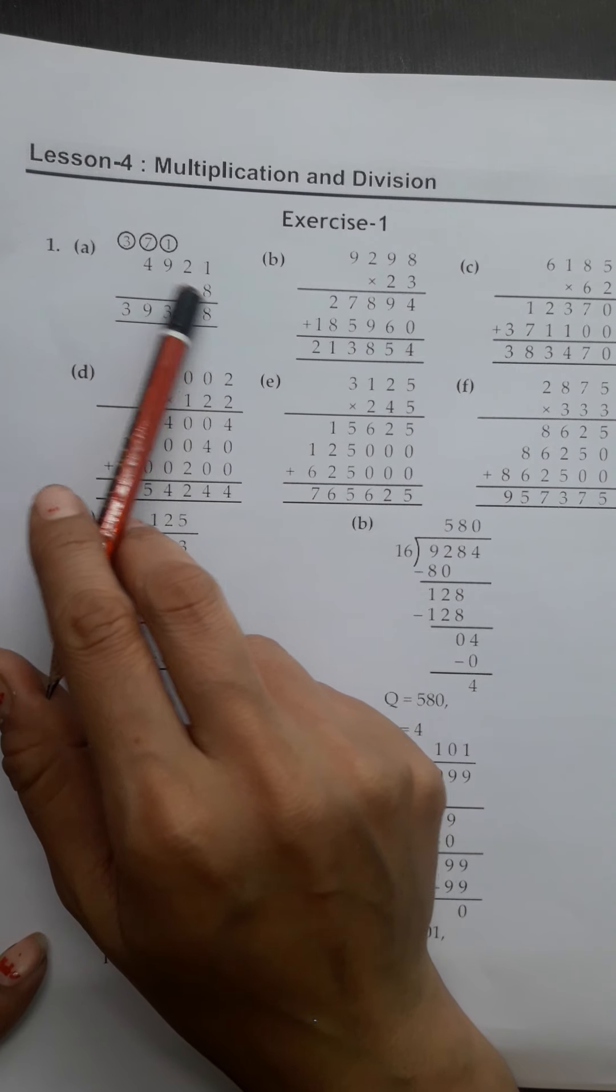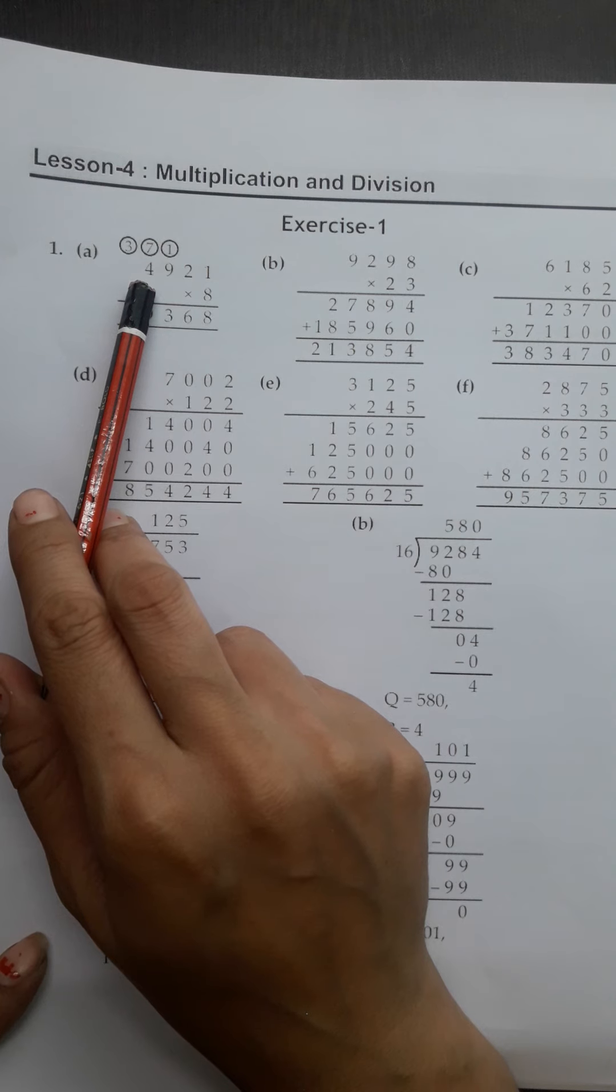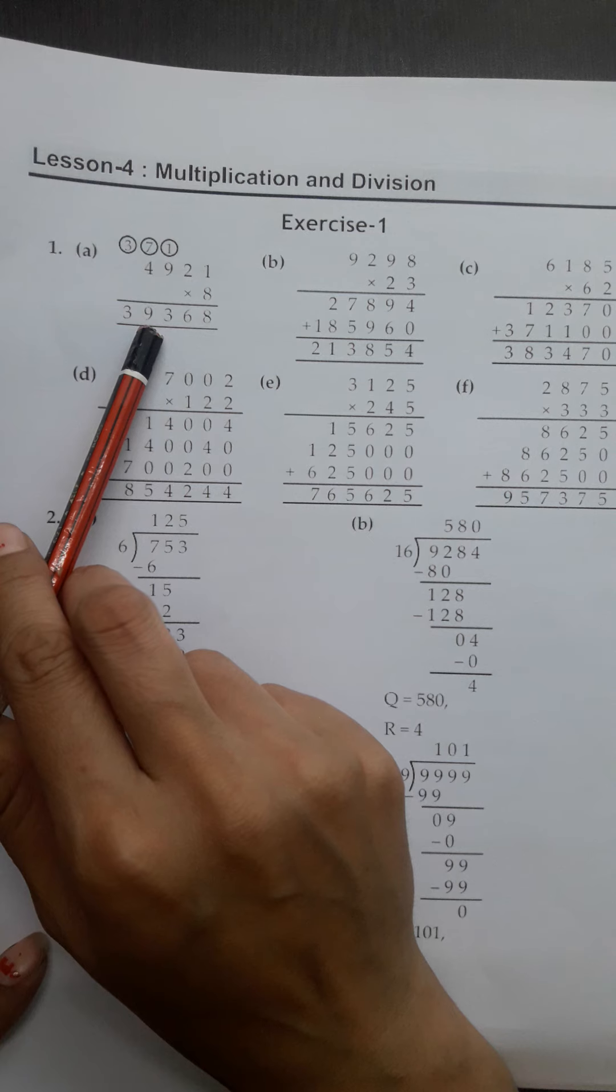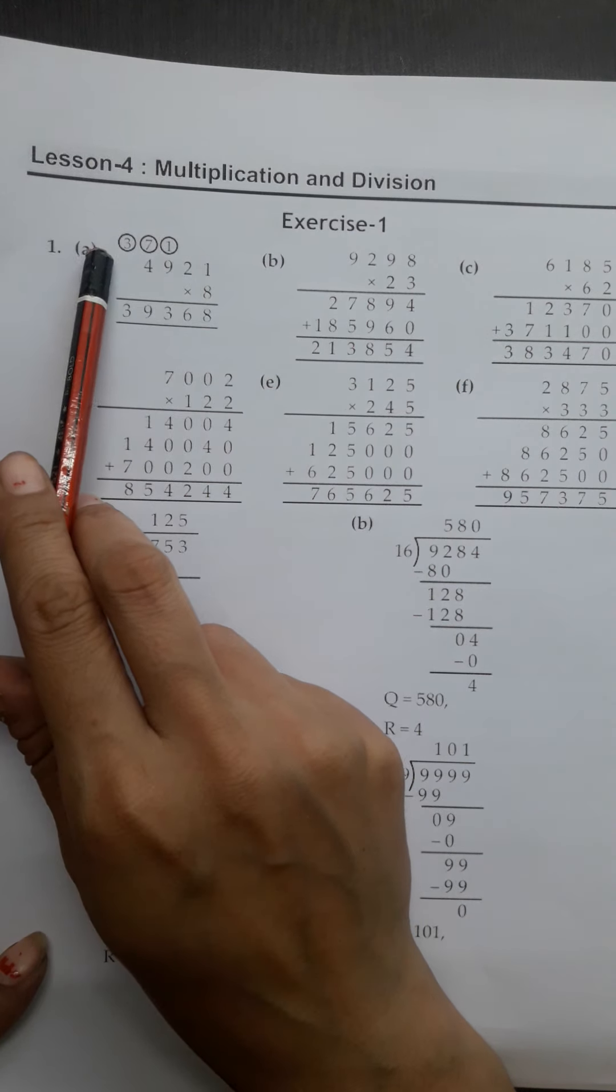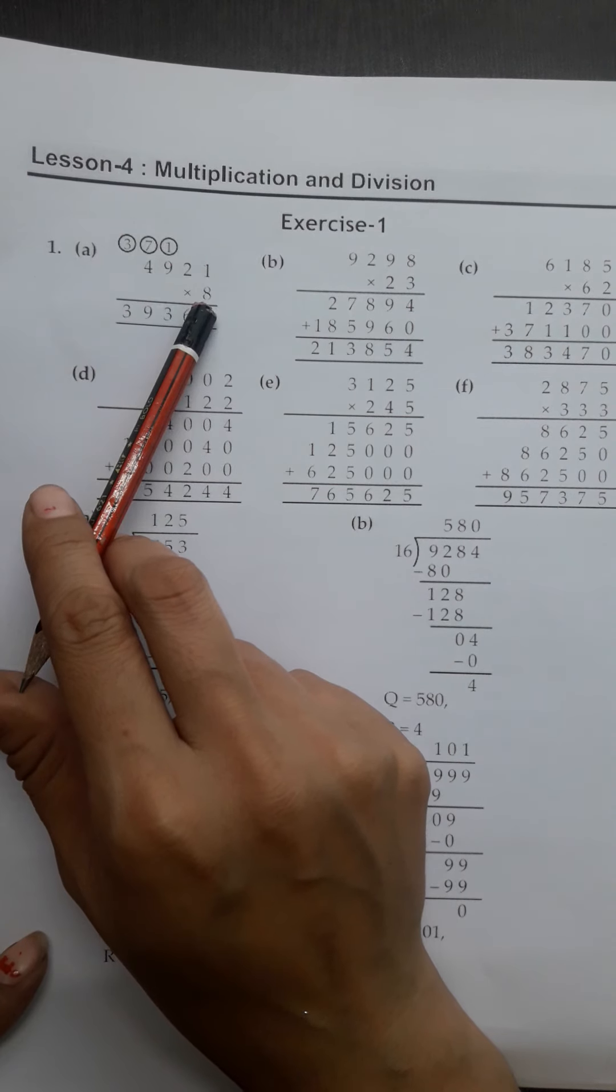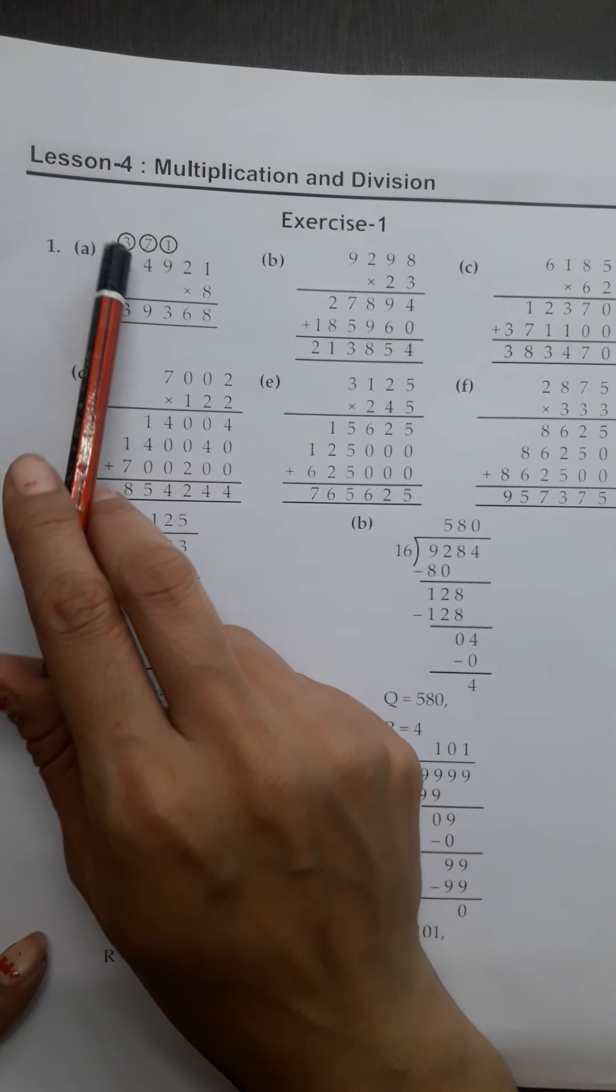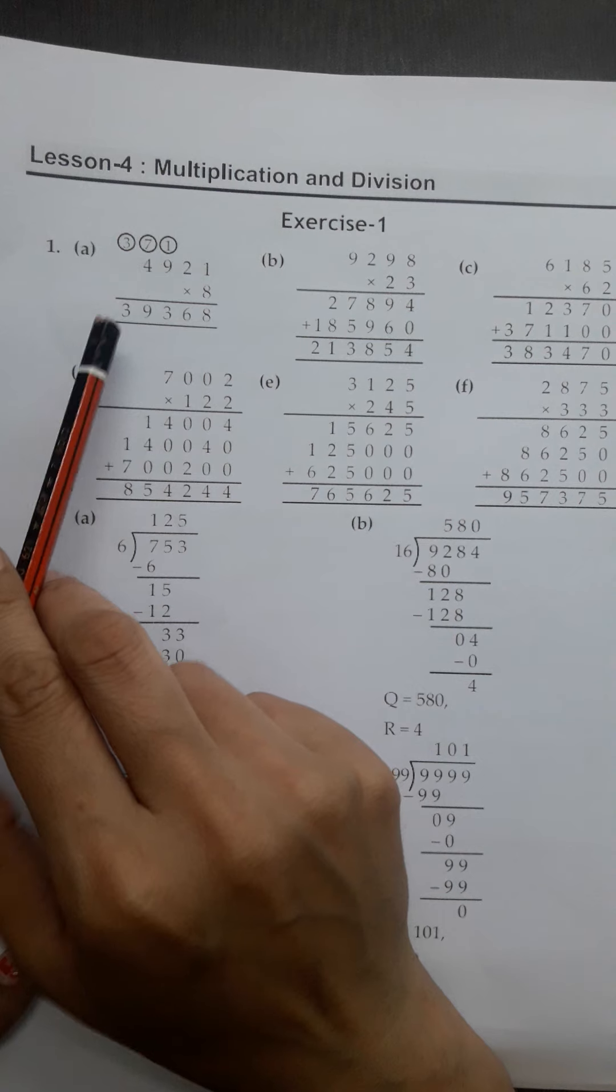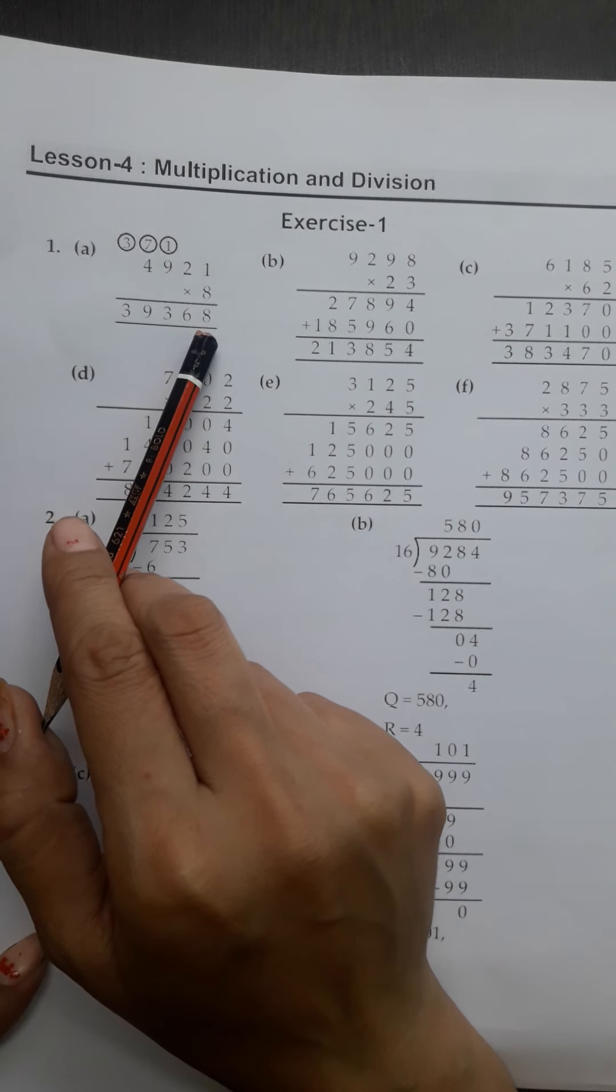We have carried 7 to 1000's place. Now, 8 fours are 32. In 32, we have added plus 7. Our answer is 39. 9 we write, 3 we carry to 10,000's place. There is nothing here, so we will put 3 as it is here. Answer was 39,368.